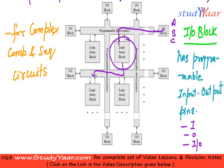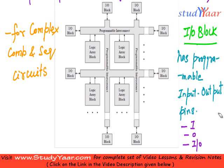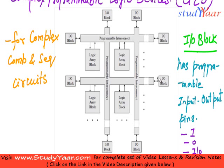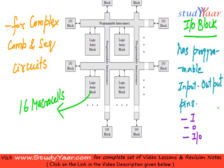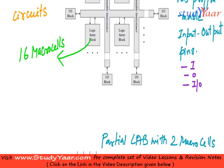The LABs are interconnected, so you can make a pretty rich and complex circuit using your CPLD. It has IO blocks, it has programmable interconnect, and it has a logic array block. A logic array block consists of 16 macro cells. The programmable interconnect is used to disperse signals between these logic array blocks and the IO block, allowing you to connect different logic array blocks together.